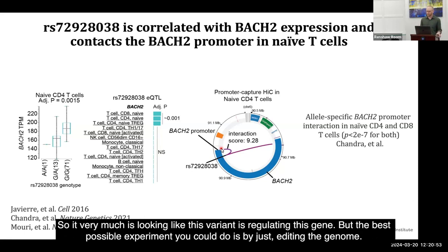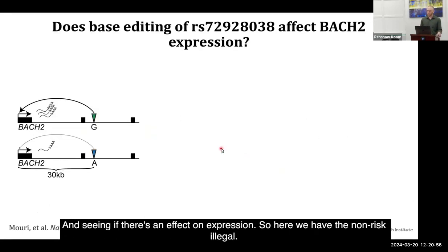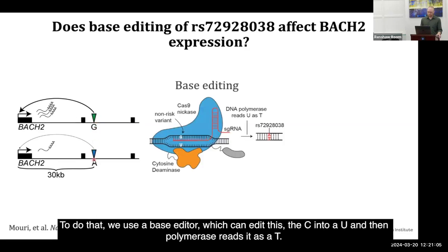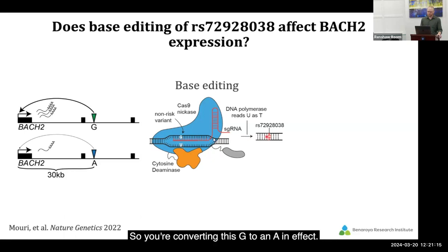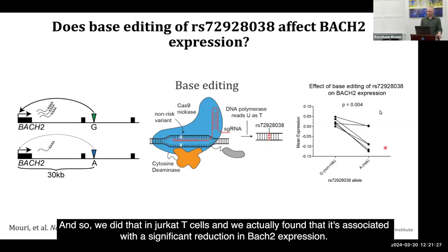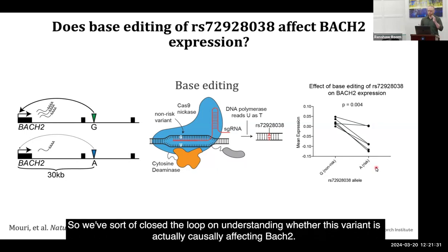The best possible experiment you could do is editing the genome and seeing if there's an effect on expression. Here we have the non-risk allele and the risk allele, and we're trying to edit the non-risk allele into the risk allele using a base editor, which can edit a C into a U and polymerase reads it as a T — effectively converting a G to an A. We did that in Jurkat T cells and found that it is associated with a significant reduction in Bach2 expression. So we've closed the loop on understanding whether this variant is actually causally affecting Bach2 expression.